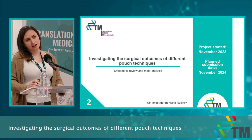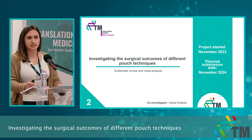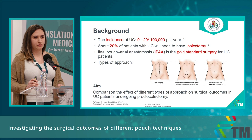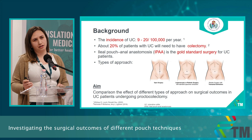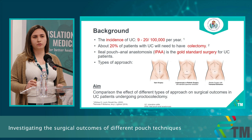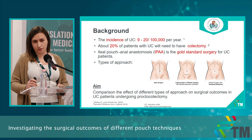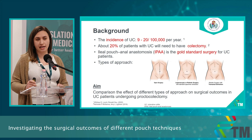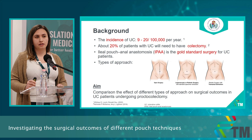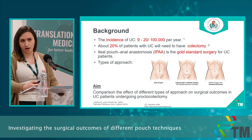We have a second project investigating the surgical outcomes of different pouch techniques. This is also a systematic review and meta-analysis. The incidence of ulcerative colitis is between 9 and 20 per 100,000 people per year. About one-fifth of patients will need a colectomy. The ileal pouch-anal anastomosis is the gold standard surgery for UC patients, but nowadays we have more approaches: the open, laparoscopic, robotic, and transanal ones.